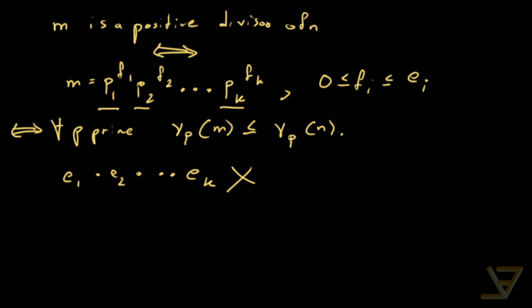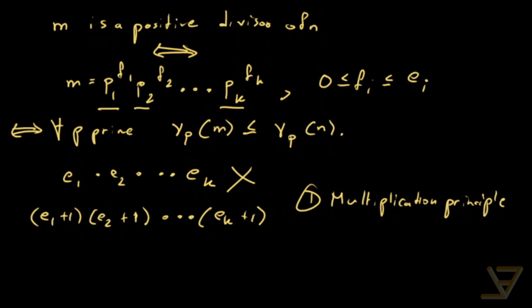The correct answer is e1 plus 1 times e2 plus 1 all the way through to ek plus 1. And the reason we do this is, first of all, we're using the multiplication principle. Multiplication principle from combinatorics.